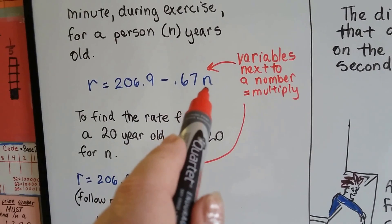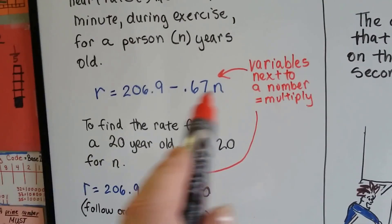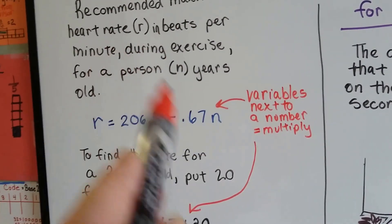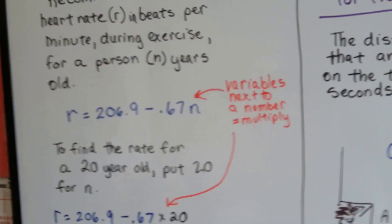Now you could use your own age and plug it in here. You can write this down and try putting your own age in here and working this, and seeing what your heart rate should be maximum recommended during exercise. Wouldn't that be kind of fun to find out what your own personal one is?